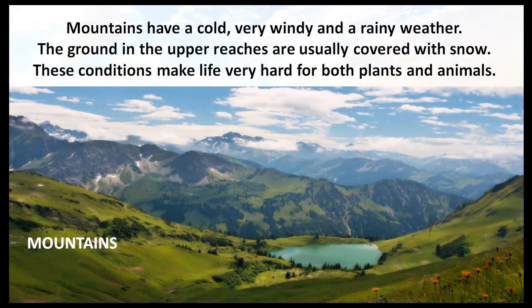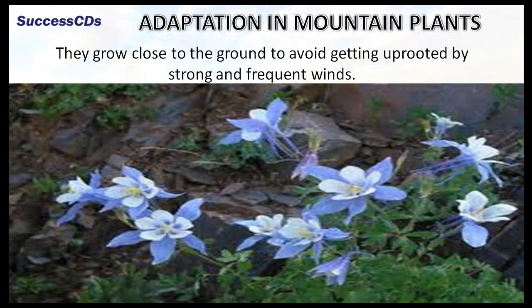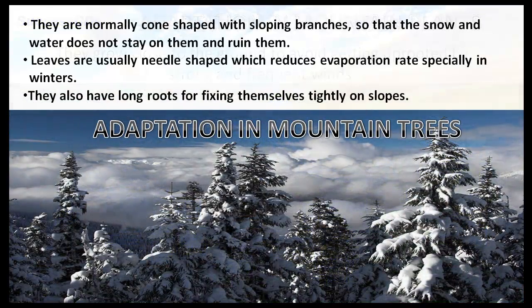Mountains have a cold, windy and rainy weather. The ground in the upper reaches is usually covered with snow. These conditions make life very hard for both plants and animals. Most mountain plants grow close to the ground to avoid getting uprooted by strong and frequent winds. The mountain trees are normally cone-shaped with sloping branches so that the snow and water does not stay on them and ruin them. Leaves are usually needle-shaped which reduces evaporation rate, especially in winters. They also have long roots for fixing themselves tightly on slopes.